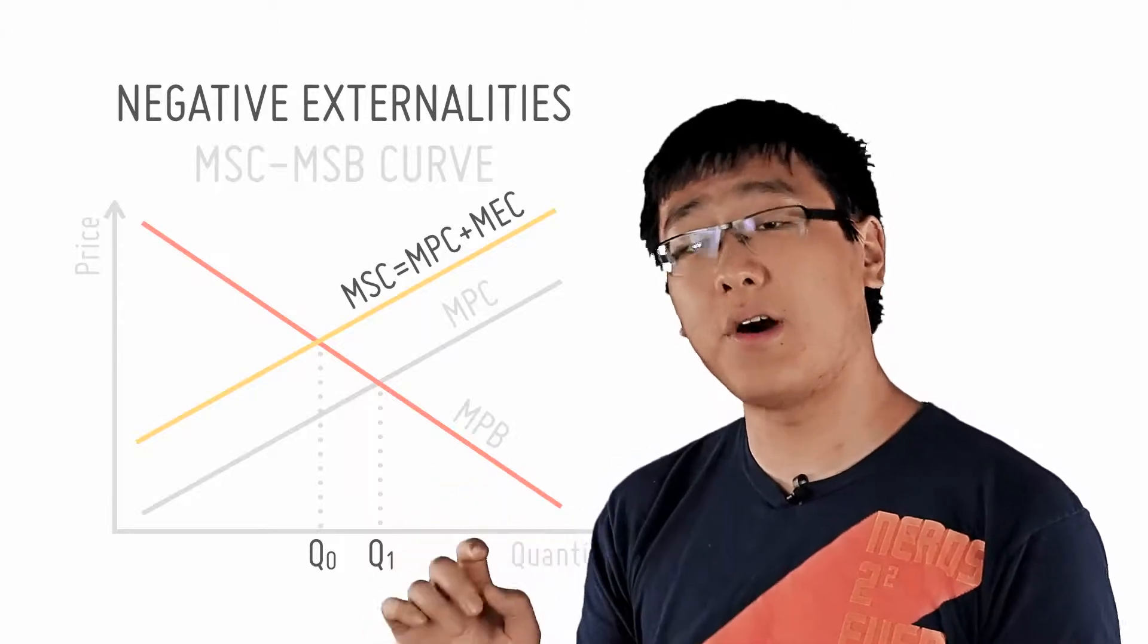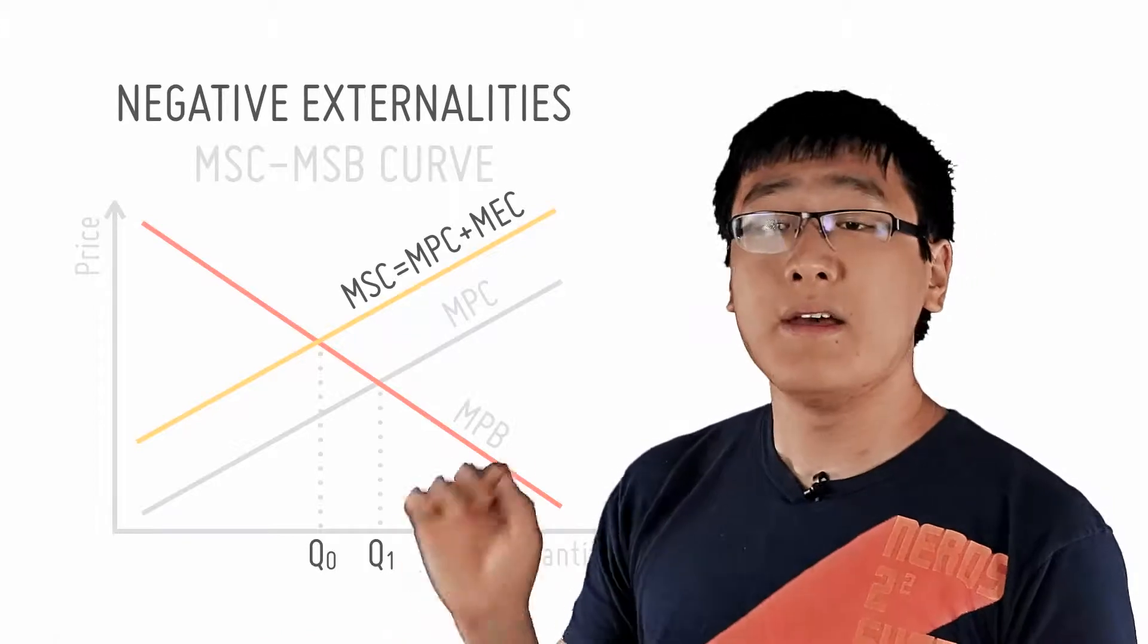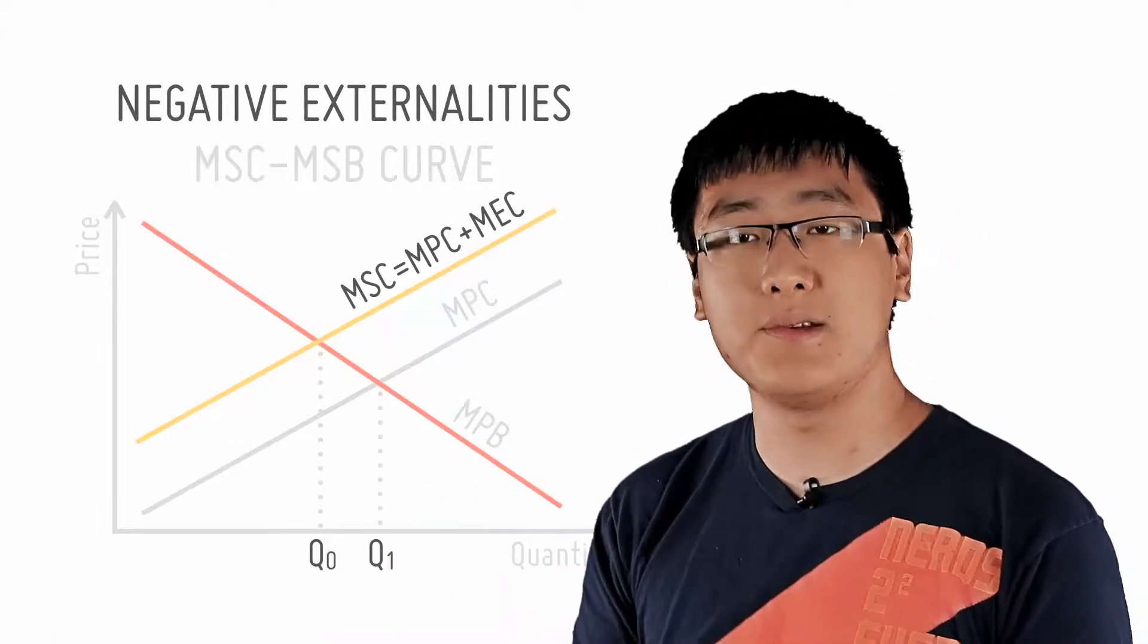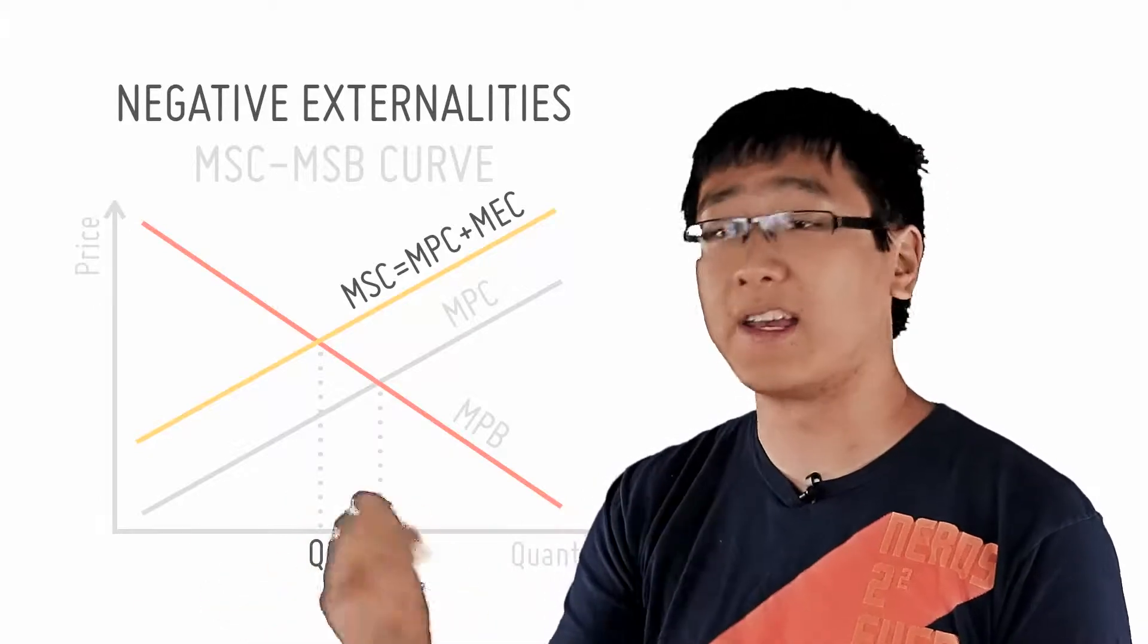Now we know that the firm causes external costs and that causes a divergence between the MSC and the MPC. This causes the firm to be overproducing, and this is shown on the diagram as the difference between Q0 and Q1.